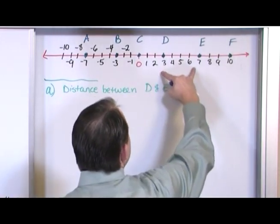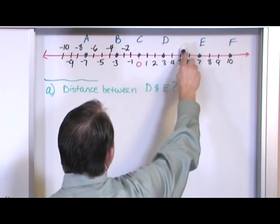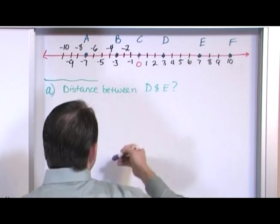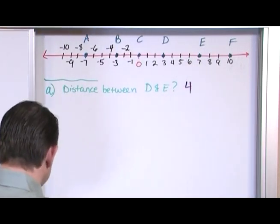So the distance between D and E is here. And so the easiest way to do it is just to start here and count. One, two, three, four. So distance of four. Okay.